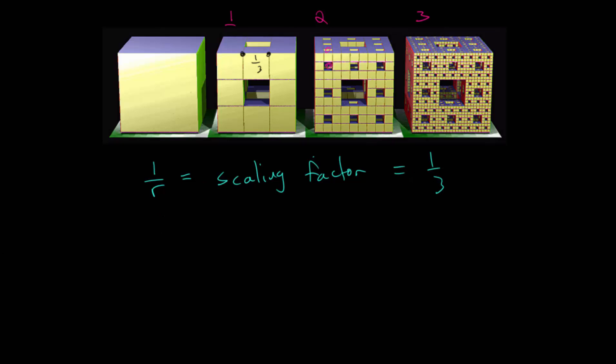Then we have a variable which we call n, and n is the number of new pieces, or number of pieces that are created after each step of the iteration process. In this case, we divide the starting cube into 27 smaller cubes, and then we remove one cube from each of the six faces.